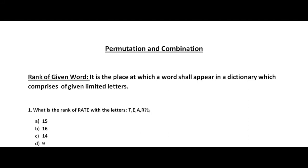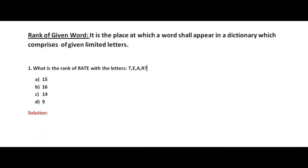Now we will see the next concept in permutation and combination: the rank of a given word. The rank is the place at which a word shall appear in a dictionary which comprises of only some given limited letters. We will assume a dictionary that comprises of some limited alphabets instead of all 26. We can understand this concept from the question.